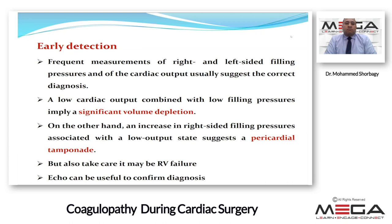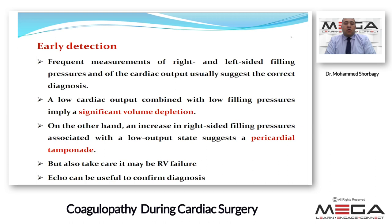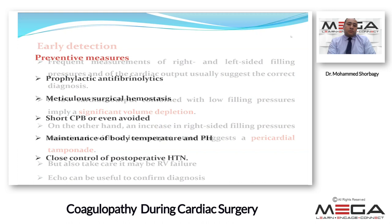Frequent measurements of right and left-sided filling pressures — CVP and pulmonary capillary wedge pressure — and cardiac output help suggest a correct diagnosis. Low cardiac output with low blood pressure and low filling pressures indicate significant volume depletion. Conversely, increased right-sided filling pressure with elevated CVP, congested neck veins, and low cardiac output suggests pericardial tamponade — confirmed by ECHO, while taking care to differentiate from RV failure, which also presents with elevated right-sided filling pressure and low cardiac output.